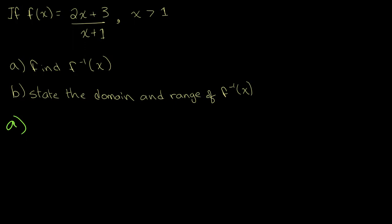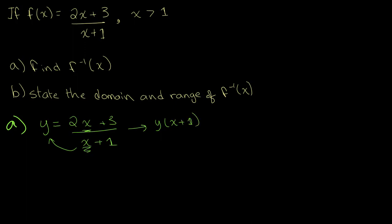As I mentioned in the last video, the first step to finding an inverse function is to simply write your function in the form y equals f(x). So in this case that's y = (2x + 3) / (x + 1). From here, when solving for an inverse function you want to get x alone — solving for x in terms of y. So first we'll multiply both sides by (x + 1) to get y(x + 1) = 2x + 3.